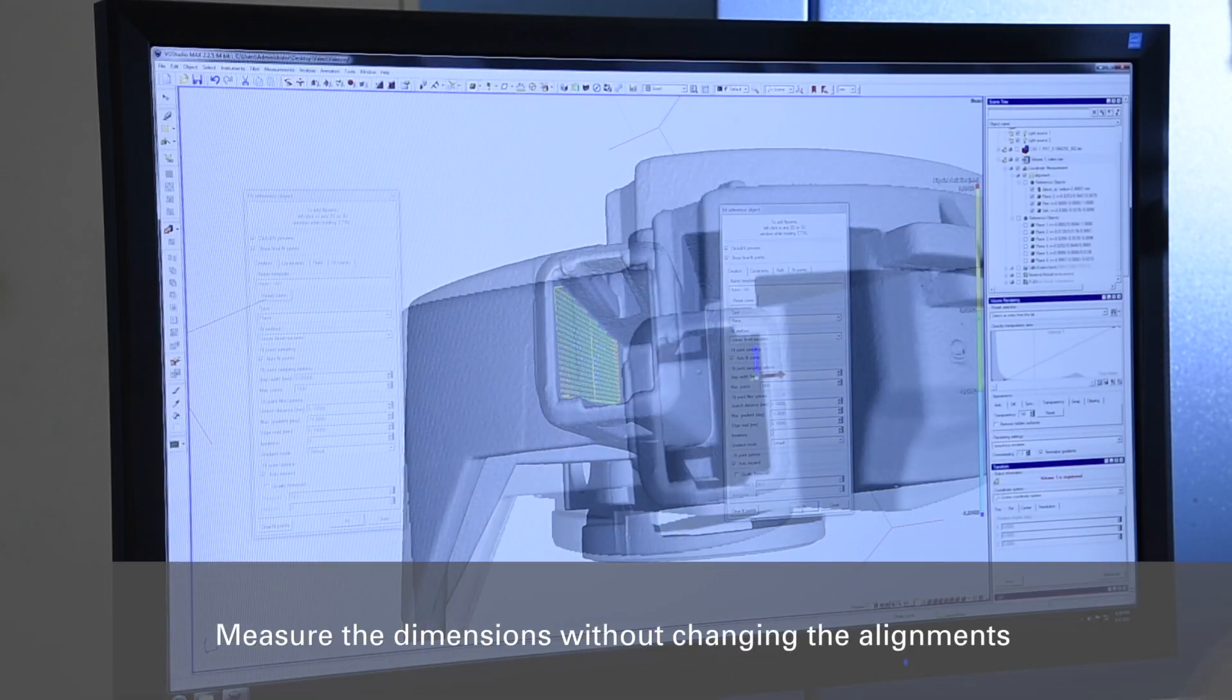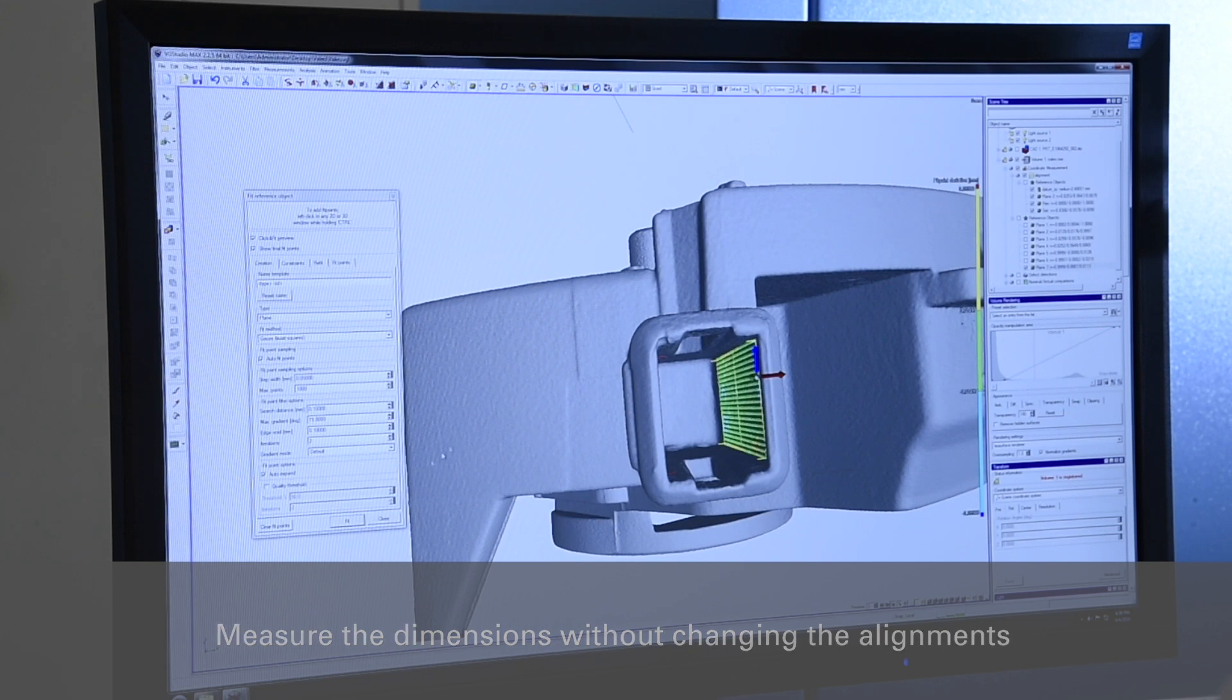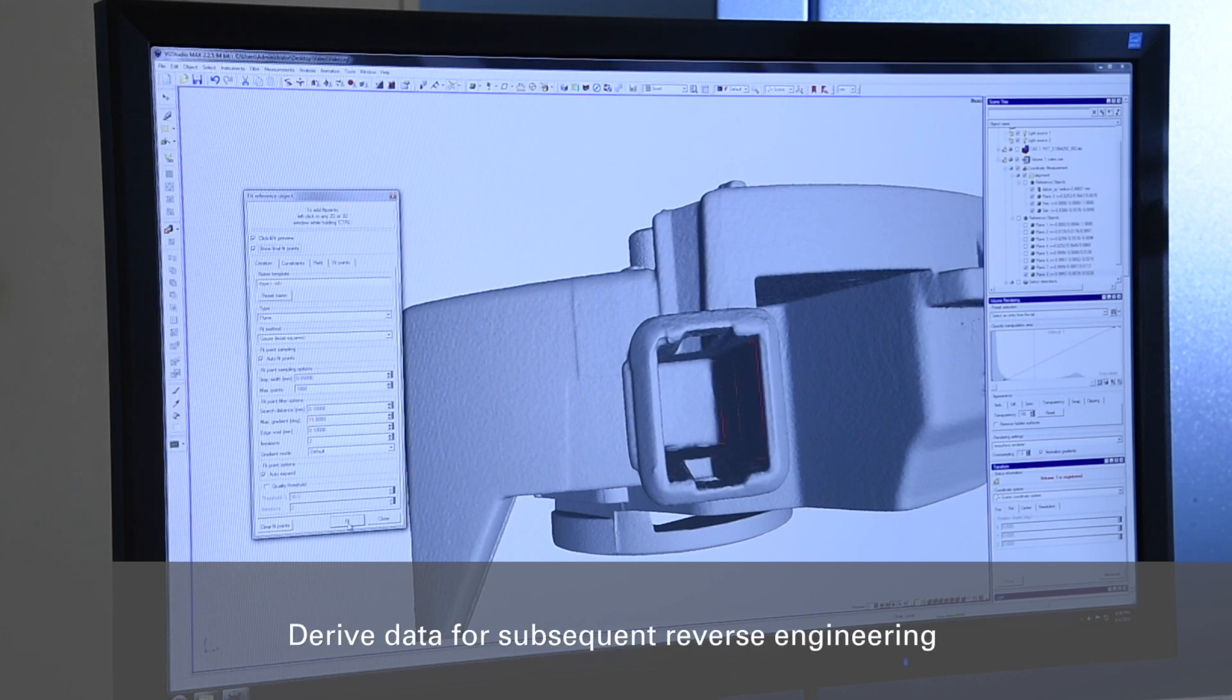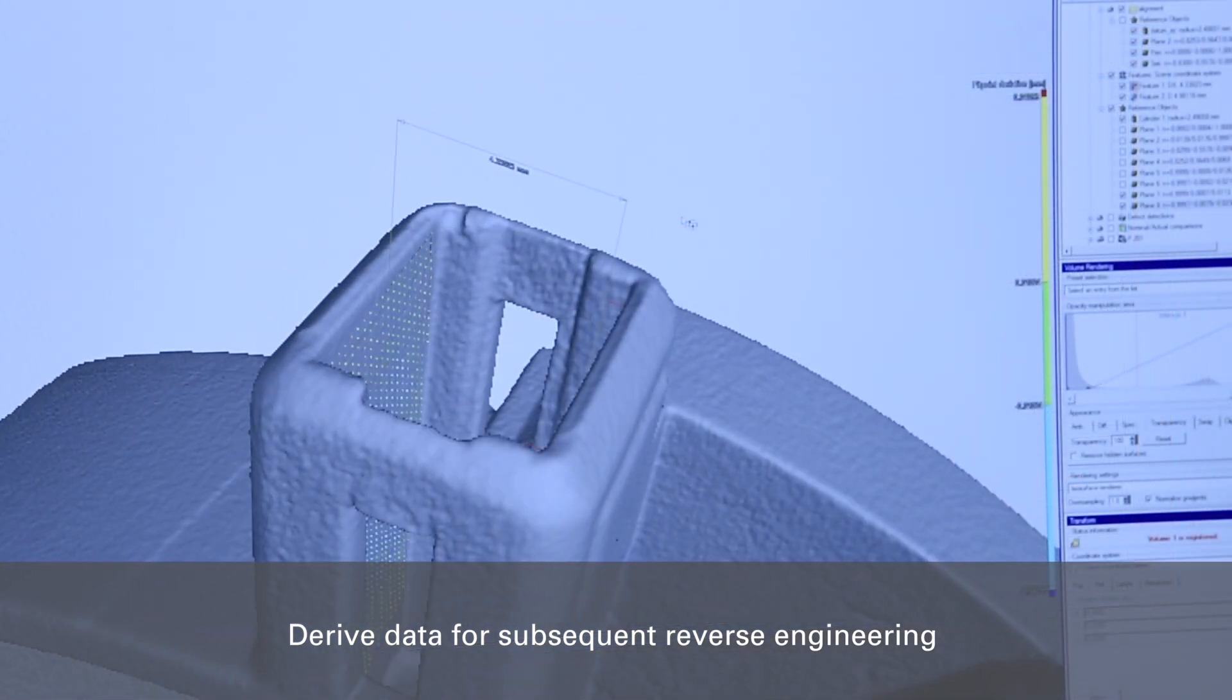A specimen inspection, as per drawing, is also possible. This allows you to measure the entire component without changing the alignment. You can also derive surface data and deviations for subsequent reverse engineering.